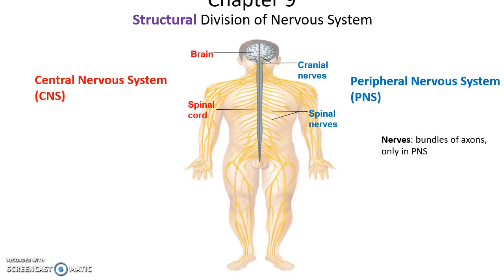The nervous system structurally is broken down into two main regions. You have the central nervous system composed of the brain and spinal cord, and the peripheral nervous system composed of the cranial nerves and the spinal nerves. Nerves are bundles of axons found in the peripheral nervous system.